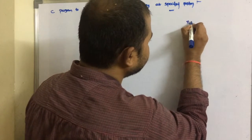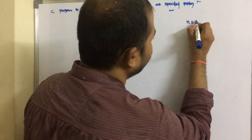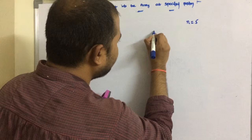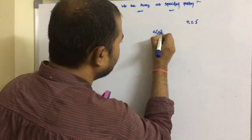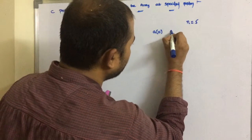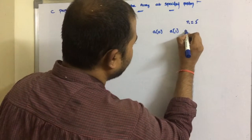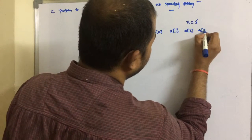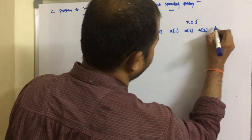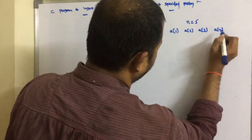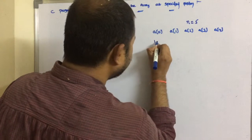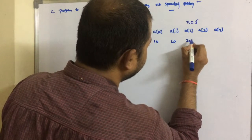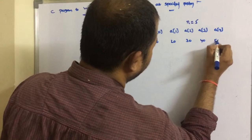Let the size of the array be 5, so n is equal to 5. We can have 5 elements from a[0] to a[4], because the index starts from 0 and continues up to n minus 1. Let the elements of the array be 10, 20, 30, 40, and 50.